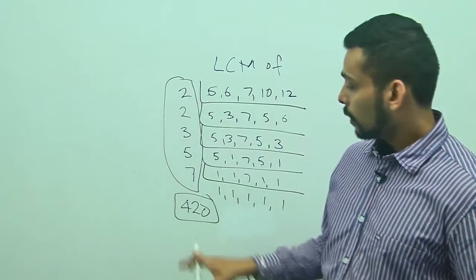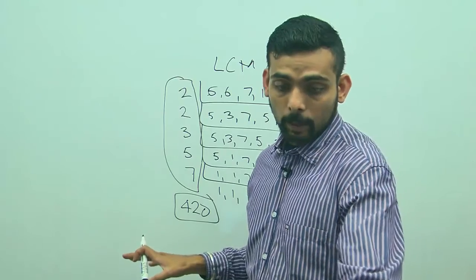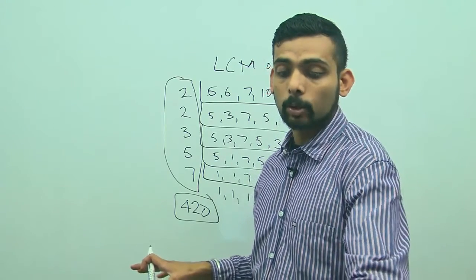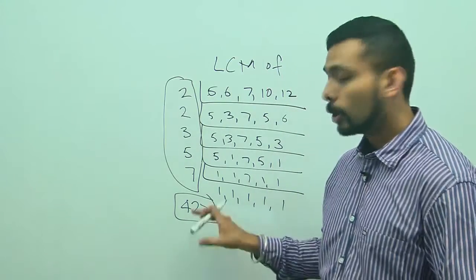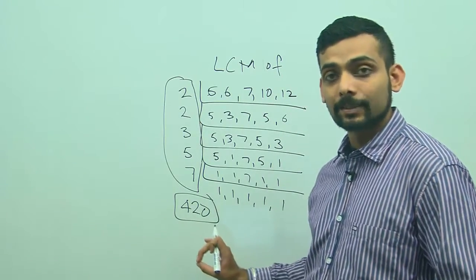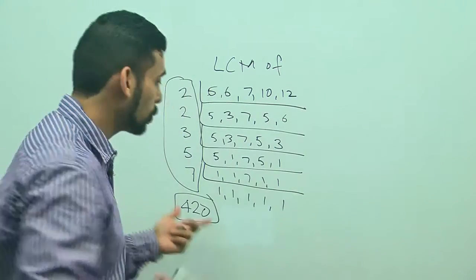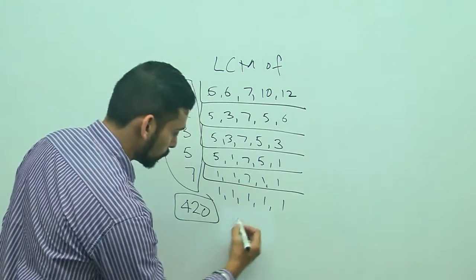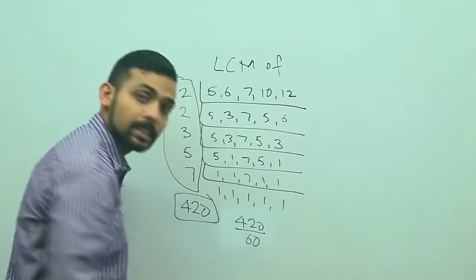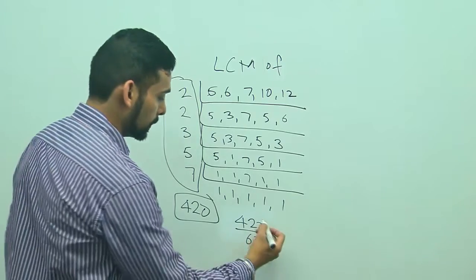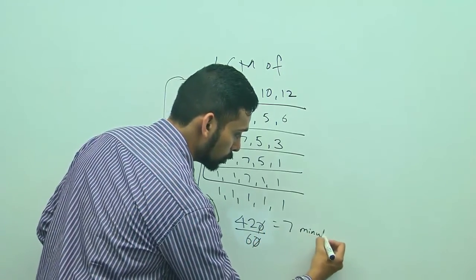Now my options are in times. I want to find out how many times will they toll together in 1 hour, excluding the one at the start. So they will toll together every 420 seconds, that means how many minutes? If I want to convert 420 seconds into minutes, I have to divide 420 by 60 because there are 60 seconds in 1 minute. So I will get 7 minutes.